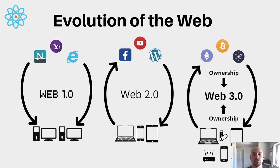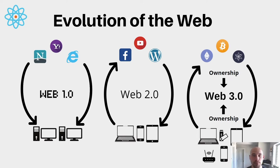Looking at the evolution of the web: Web 1.0 had things like Netscape, Yahoo, and Internet Explorer — a lot of these have been shelved or are rarely used anymore. Web 1.0 was really a one-directional static page situation. Web 2.0 is more circular — you can upload and download content, interact a lot more, and more interactive services and social networks like Facebook were developed. You're also able to do CRM with a lot more user contribution and ability to create and interact.